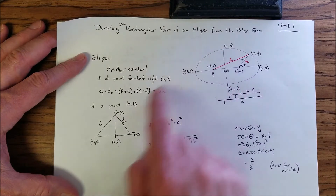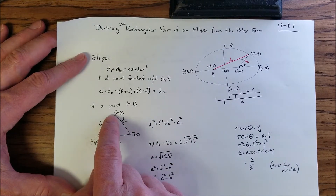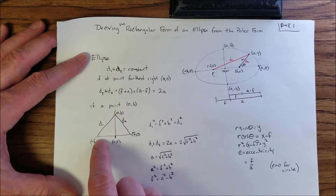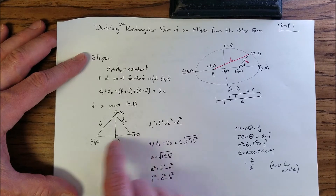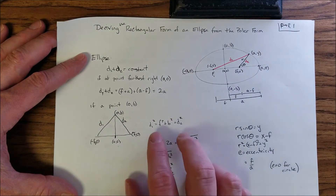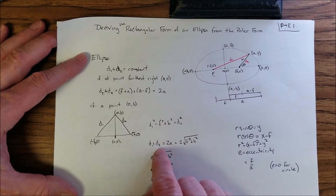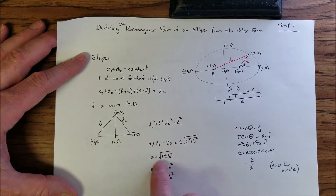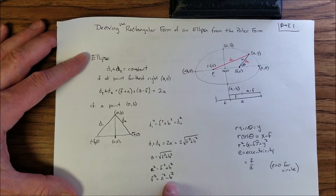Taking the other extreme point at (0, b), the distance from each focal point to that point must also sum to 2a. By the Pythagorean theorem, d1 squared equals f squared plus b squared, and by symmetry d2 is the same. So d1 plus d2 equals 2 times the square root of f squared plus b squared, giving us a equals the square root of f squared plus b squared, or equivalently f squared equals a squared minus b squared.